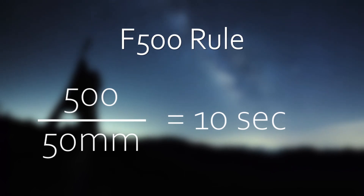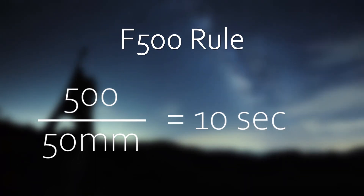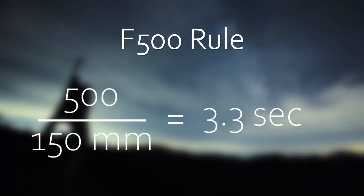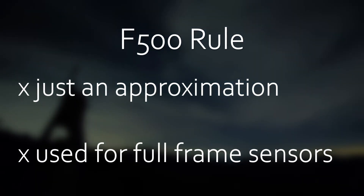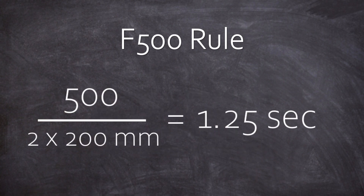Let's see some examples. Take a 50mm kit lens: divide 500 by 50 equals 10, so you can take 10-second exposures without star trails. Now take a 150mm telephoto lens: 500 divided by 150 equals roughly 3.3 seconds of exposure time. But always keep in mind, the F500 rule is just an approximation and is derived from a full-frame sensor. If you use a cropped sensor, you need to multiply the focal length with a certain crop factor. For example, an Olympus Micro Four Thirds at 200mm focal length gives you 500 divided by 200 times 2, equals 500 divided by 400, equals a bit more than one second of exposure time without star trails.